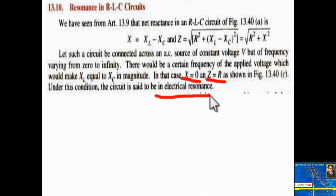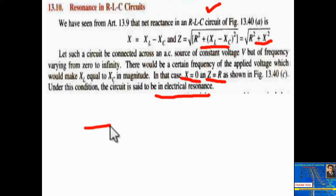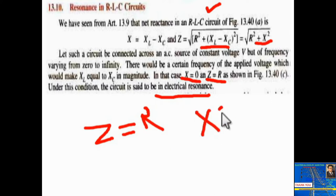In a series RLC circuit, net reactance X = XL − XC, and impedance Z = √(R² + (XL − XC)²), which simplifies to Z = √(R² + X²). During resonance, X = 0 because the net reactance is zero, so Z becomes equal to R.